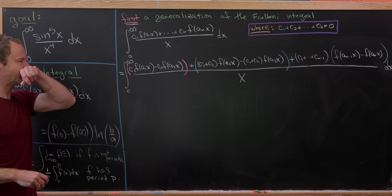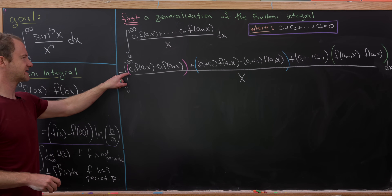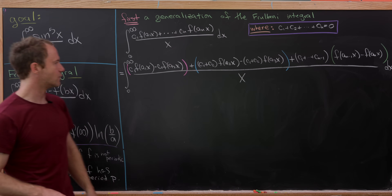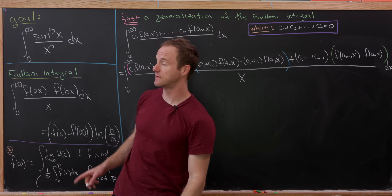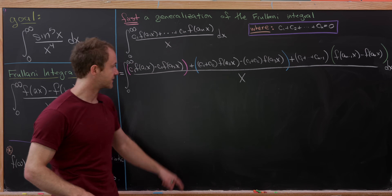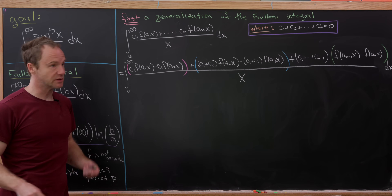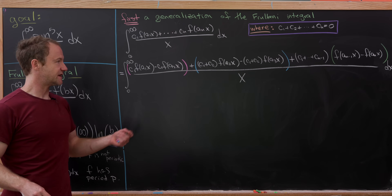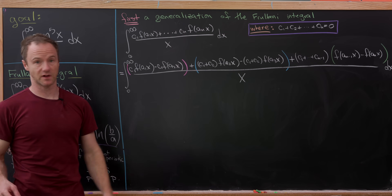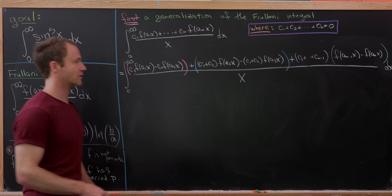Looking at the magenta parentheses, that's exactly c₁ times a simple Frulani integral. The blue parentheses give (c₁ + c₂) times another Frulani integral, and so on and so forth — each group is a scalar multiple of a standard Frulani integral.